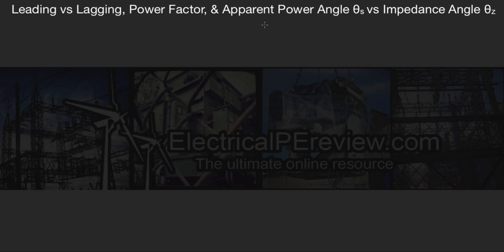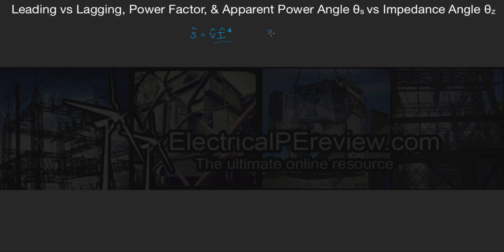So let's jump into it. First, we're going to talk about our apparent power angle theta S and how it relates to our impedance angle theta Z. We can start by writing our apparent power vector S equals our voltage vector multiplied by our current vector with a conjugate. Typically voltage is always constant — we have some power system with a known applied voltage and a current drawn by a specific load. To compare apparent power to impedance, we rewrite current using Ohm's law: V equals IZ, so I equals V over Z.